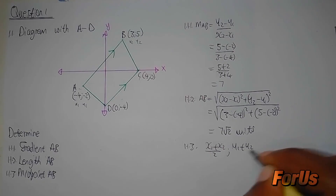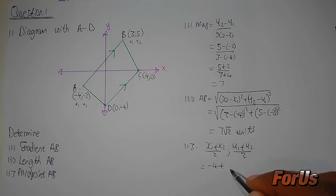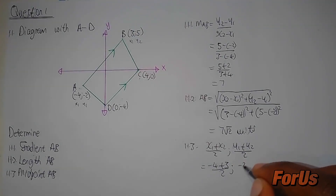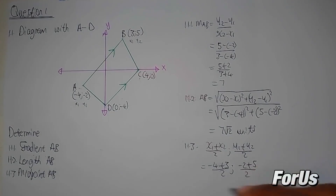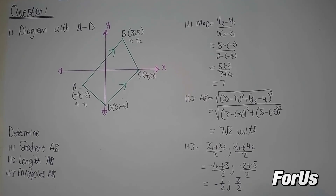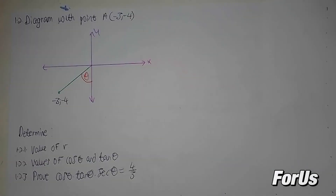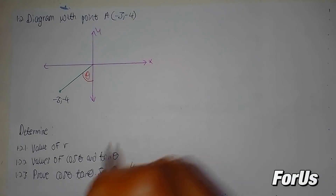Substituting the values: x1 is negative 4 plus 3 divided by 2, and y1 is negative 2 plus 5 divided by 2. This gives negative 1 over 2 and 3 over 2. We can conclude that the midpoint is (negative 1/2, 3/2).